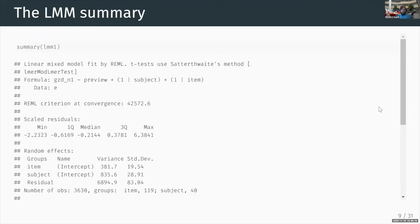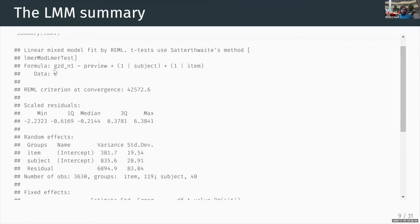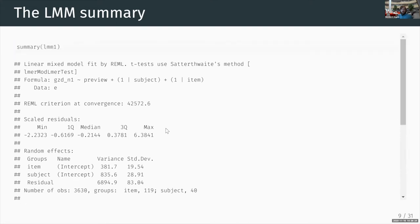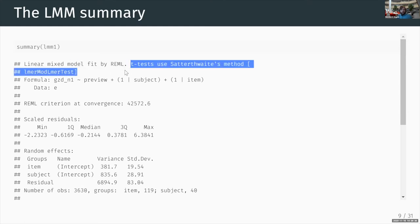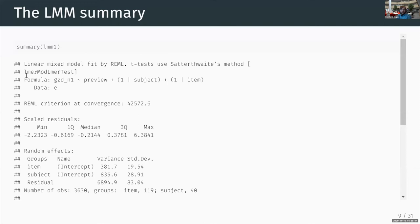This is what we get from the model. Notice that we loaded lmerTest before running this — that's why we get the message 'T tests use Satterthwaite method.' We'll talk about that in a second. The class of the object LMM1 is lmerModLmerTest, which means it's a model fitted by lmer, but lmerTest modifies that class to also give you p-values.